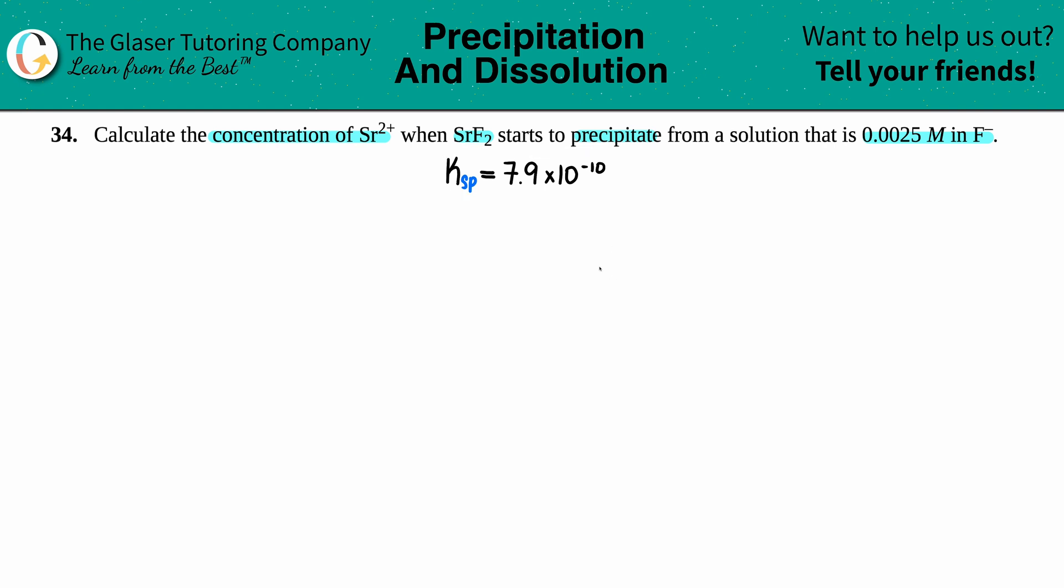Now when we're using Ksp values, just know that the solution has to be a saturated solution. A saturated solution means that you're basically just starting to make a solid. But if you're making way too much of a solid, you're oversaturated—that's a supersaturated solution. But in here they gave us the keywords that we're starting to precipitate, so that means we're just at the beginning. That's a saturated solution.